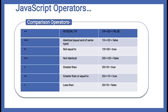You may be seeing the triple equal-to operator for the first time. It checks the type. For example, `a = 5` (number) and `b = '5'` (string in double quotes) — one is a string, one is a number. When we use triple equal-to (===), the value returned will be false because the types differ. Other comparison operators: not equal to (!=), not identical (!==), greater than (>), greater than or equal to (>=), and less than or equal to (<=).